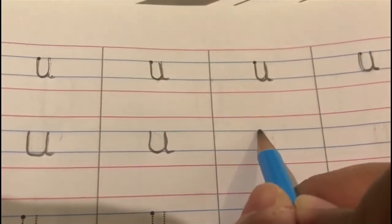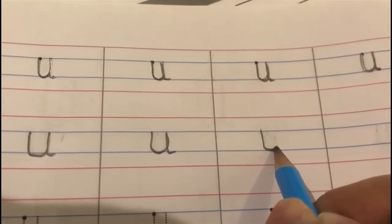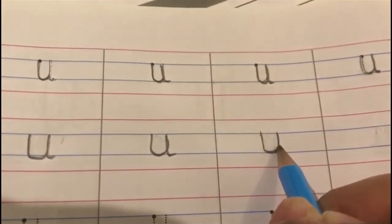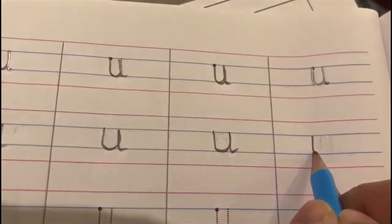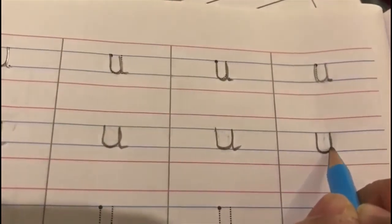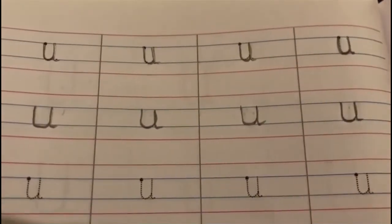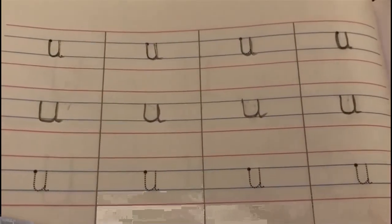Start from the first blue line. Go down. Lumpity, go up. Come down. Take a tail. U. U says 'a'. Okay. In this manner, children, we are going to complete this entire page.